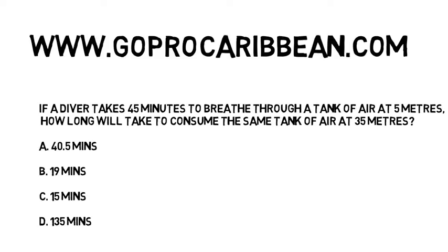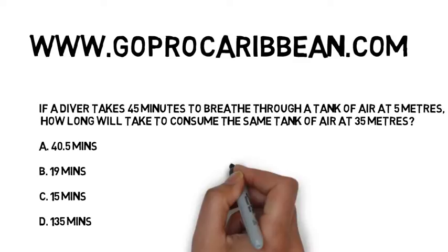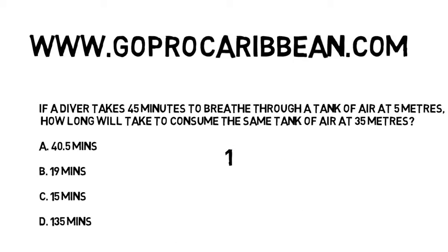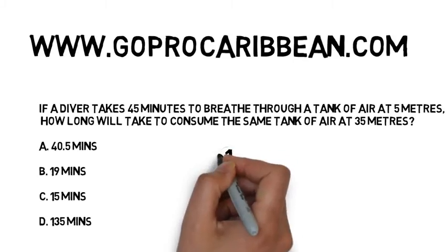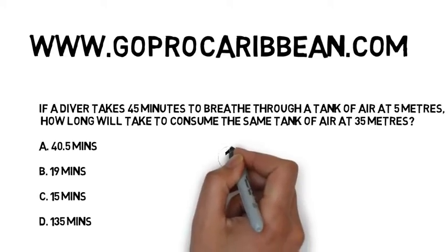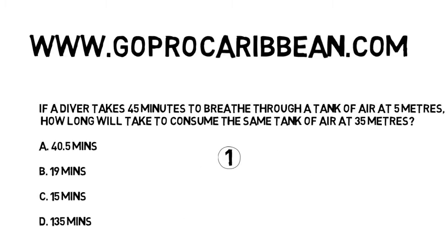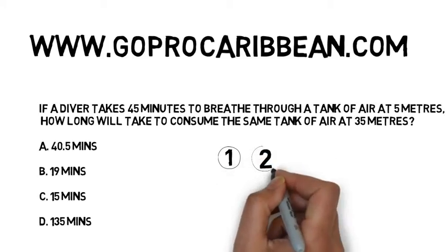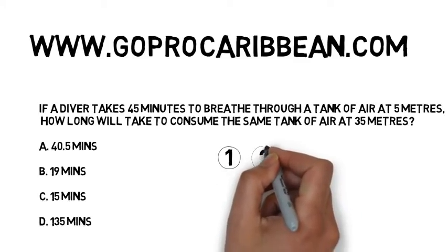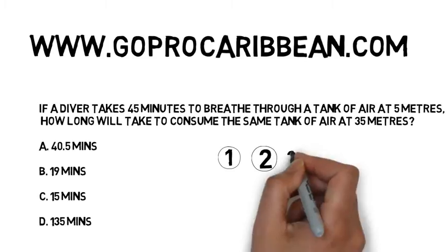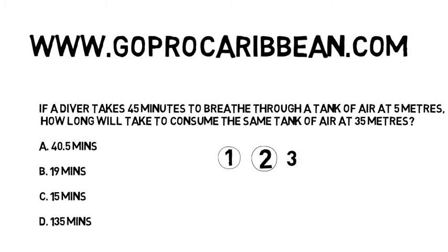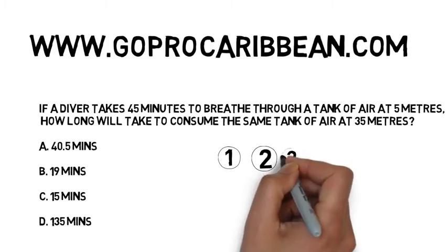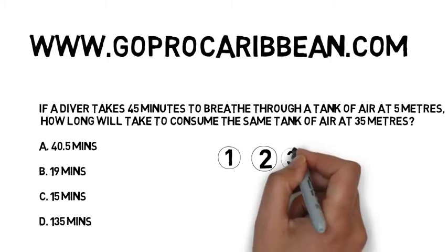What we're doing is looking at questions that go from one depth to another depth. In Physics Part 1 you learned how to use the three-step process to answer questions compared to the surface. In Physics Part 2 we are moving it up a notch and comparing one depth to another depth, which means we have to use the three-step process twice.